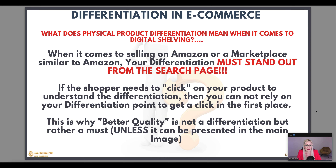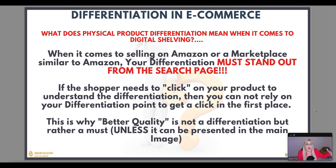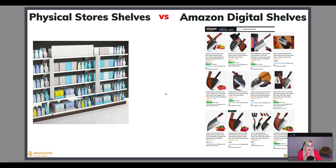When someone books a coaching call and I ask about their differentiation point and they say 'my product is better quality than everyone else's,' I point out that buyers need to purchase the product to understand that — so it's not enough to get the click in the first place. Better quality is a must, but your differentiation point must be seen from the search page. If they need to click on you to find out your differentiation, why would they click in the first place?